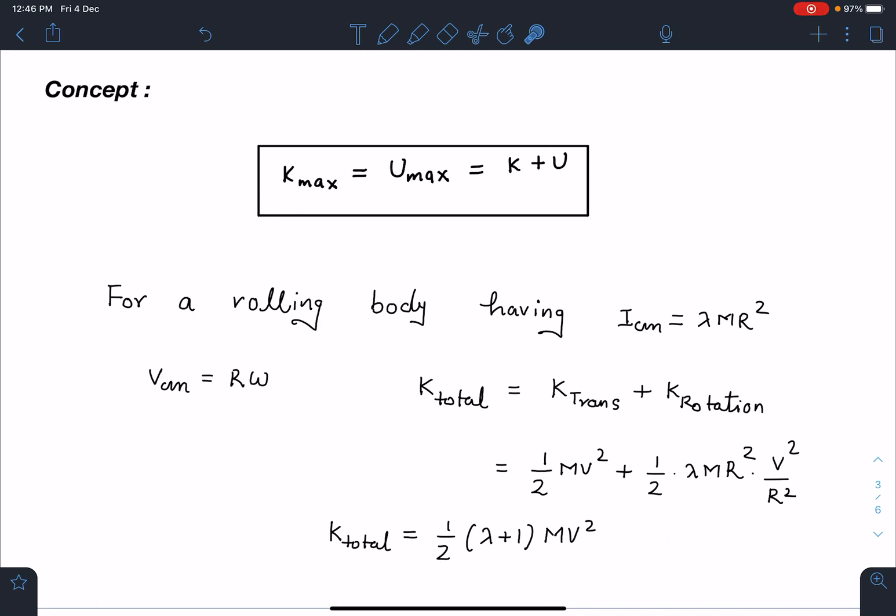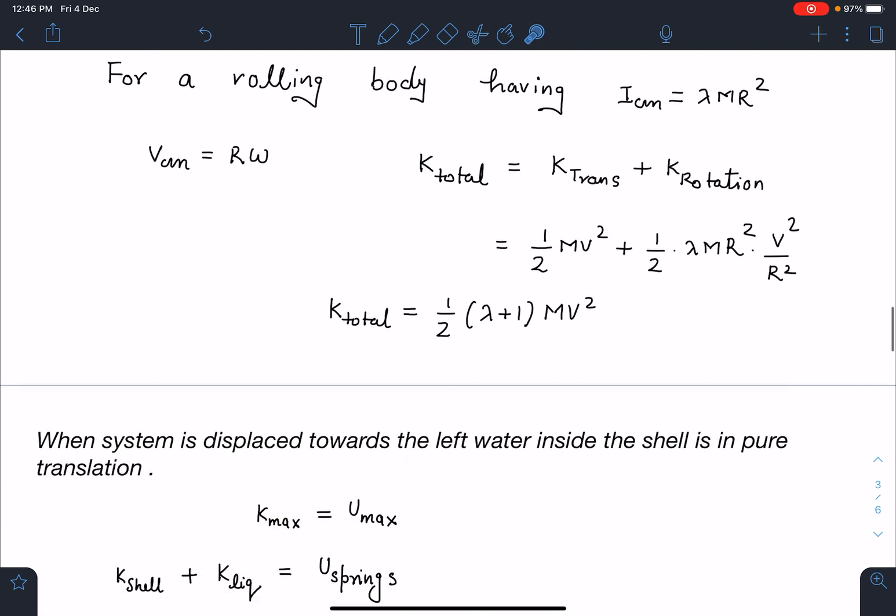In this case, I'll be using a very famous result: if a body is in pure rolling and its I_cm is given as lambda MR² and its v_cm is R*omega, I can write its kinetic energy as translational plus rotational. When I simplify, K_total comes as 1/2(lambda + 1)Mv_cm². I'll be using this result.